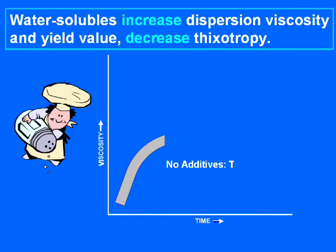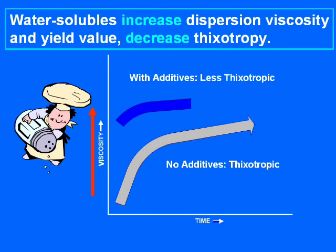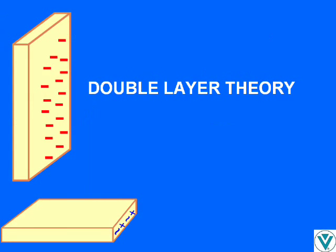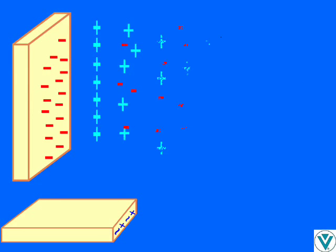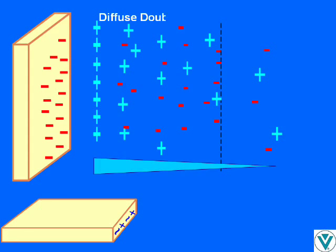Most water-soluble components will modify the rheological properties of smectite clay. Salts, surfactants, and water-miscible solvents will increase the smectite's viscosity and yield value contribution and decrease thixotropy. Double layer theory can explain the effect of electrolytes and other water solubles on clay rheology. Most of the clay's exchangeable ions tend to accumulate, by electrostatic attraction, near the negative faces of the platelets. They simultaneously have a tendency to diffuse towards the bulk of the water where their concentration is low. A diffuse atmosphere of counter-ions forms, with concentration diminishing with distance from the platelet face. A negative double layer is thus established, consisting of the negative surface charge plus the diffuse counter-ions. The analogous positive double layer is established in association with platelet edges.